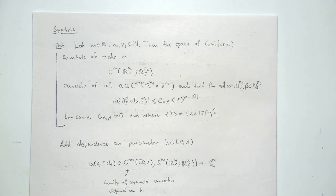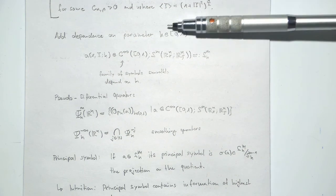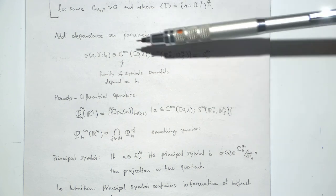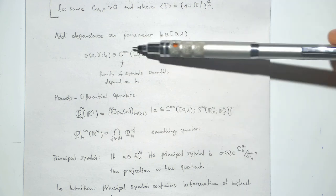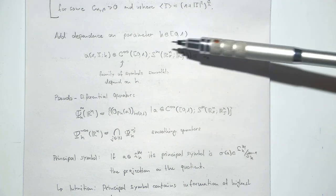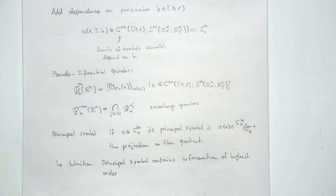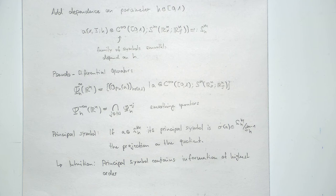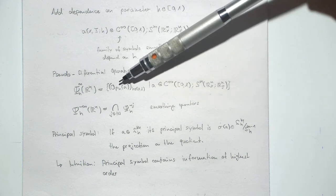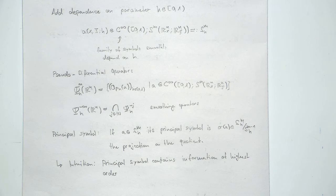We're in semi-classical analysis, so we want dependence on the H parameter. We take H between 0 and 1 and take families of symbols which smoothly depend on H. These are our symbols for the semi-classical case, and we denote this space by S^m_h. We also name the pseudo-differential operator spaces: Psi^m_h is the space of pseudo-differential operators of order m — those with symbols of order m. This m qualitatively stands for how many derivatives the pseudo-differential operator takes.